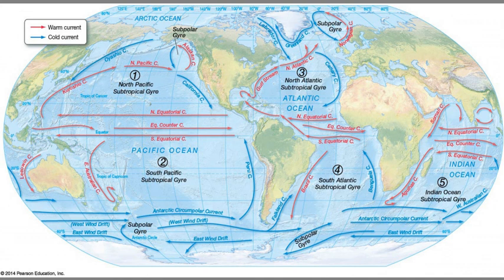Hi oceanography students. One of the things we're going to be doing in lab is looking at the surface currents of the world — these big loops of water that we call the major subtropical gyres of the world. You can see that in all of the ocean basins the water forms a kind of a big circle or a loop, and the word gyre literally means circular.